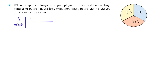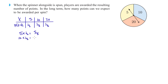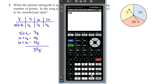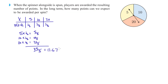We can either get a 5, a 10, or a 20. Each one of those has a 1/3 probability. So 5 times 1/3 gives us 5/3, 10 times 1/3 gives us 10/3, and 20 times 1/3 gives us 20/3. Adding those all up: 35/3, which we can calculate as 35 divided by 3.